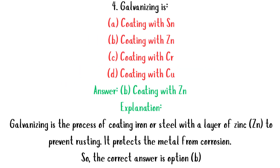MCQ 4: Galvanizing is — A. Coating with Sn, B. Coating with Zn, C. Coating with Cr, D. Coating with Cu. Answer: B. Coating with Zn. Explanation: Galvanizing is the process of coating iron or steel with a layer of zinc (Zn) to prevent rusting. It protects the metal from corrosion. So the correct answer is option B.